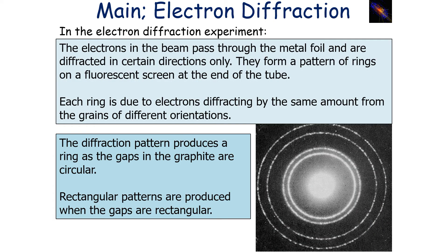In the electron diffraction experiment, electrons in the beam pass through a metal foil and are diffracted in certain directions, forming a pattern of rings on a fluorescent screen at the end of the tube. Each ring is due to electrons diffracting by the same amount from grains of different orientations. The diffraction pattern is produced as rings because the gaps in the graphite are circular, whereas rectangular patterns are produced if the gaps are rectangular.